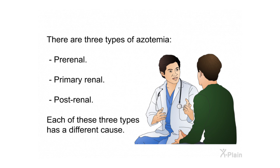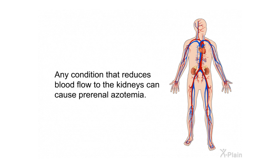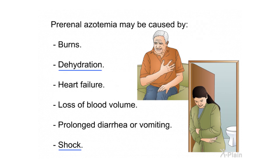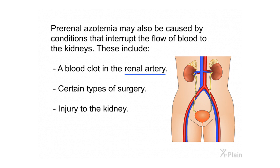Causes. There are three types of azotemia: pre-renal, primary renal, and post-renal. Each has a different cause. Any condition that reduces blood flow to the kidneys can cause pre-renal azotemia. Pre-renal azotemia may be caused by burns, dehydration, heart failure, loss of blood volume, prolonged diarrhea or vomiting, or shock. It may also be caused by conditions that interrupt blood flow to the kidneys, including a blood clot in the renal artery.